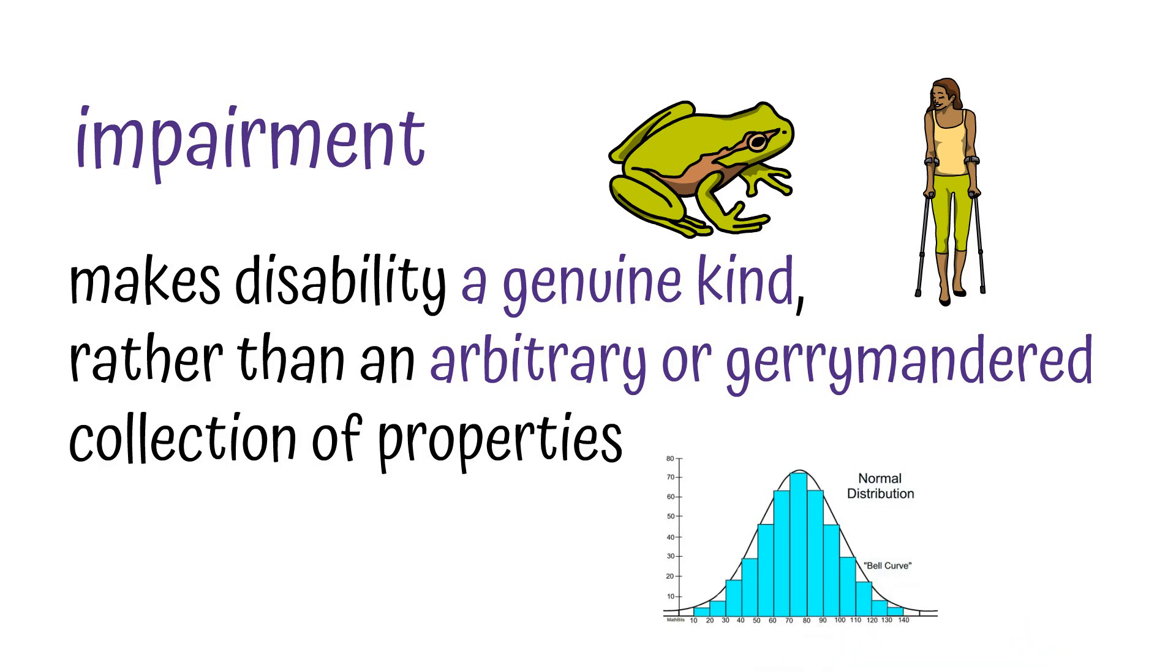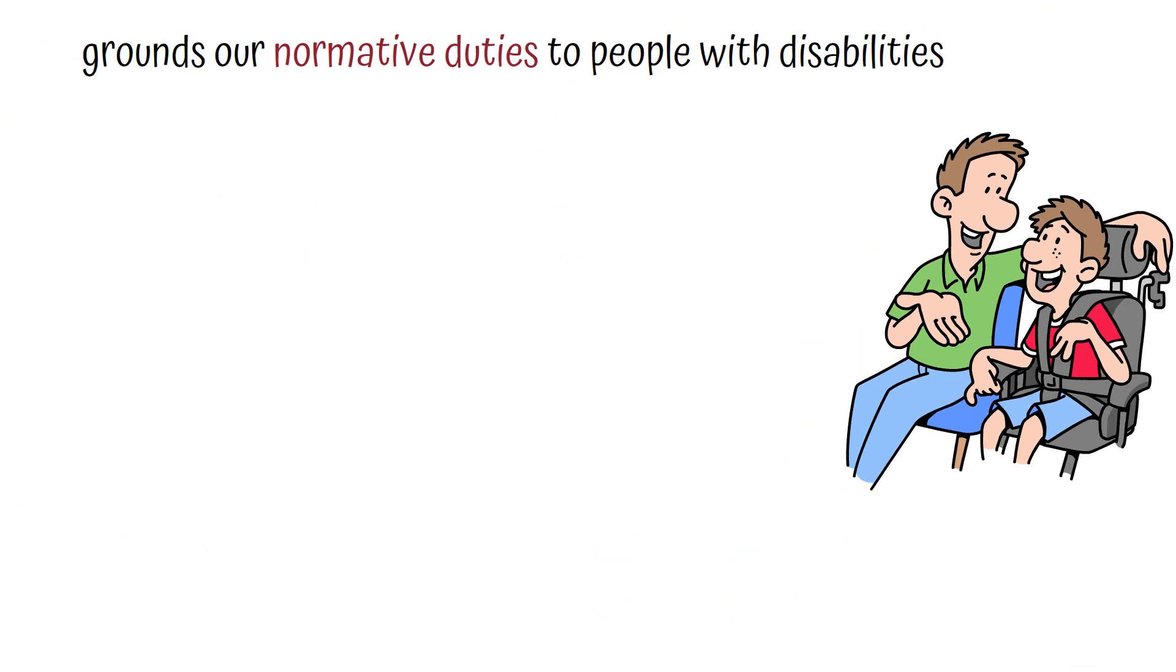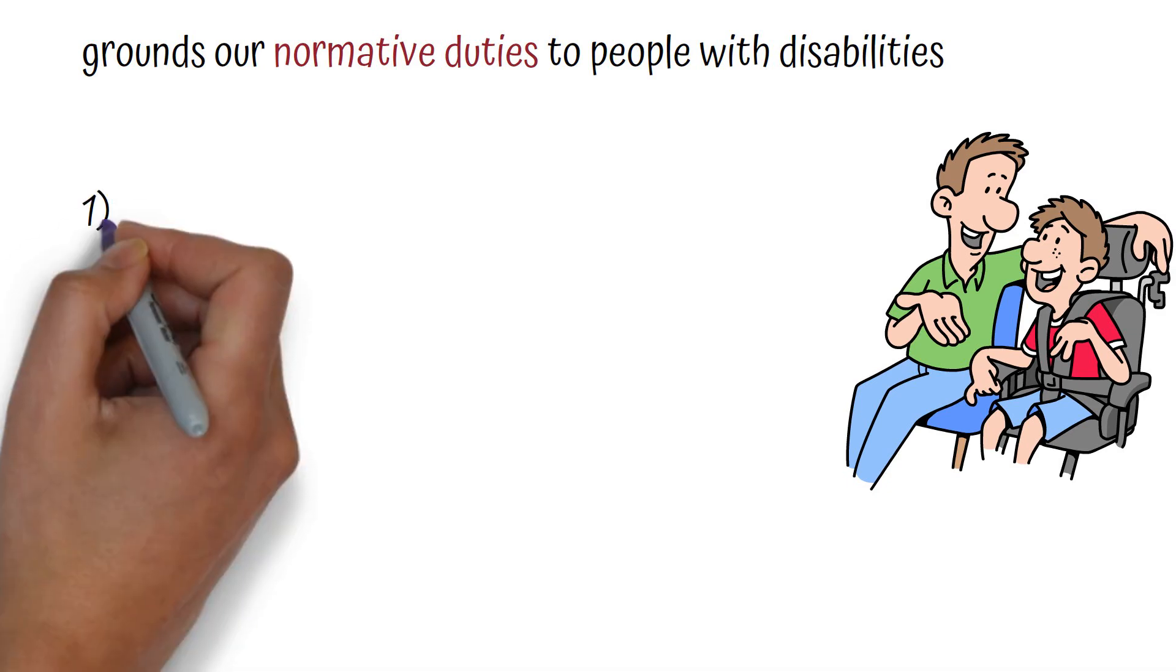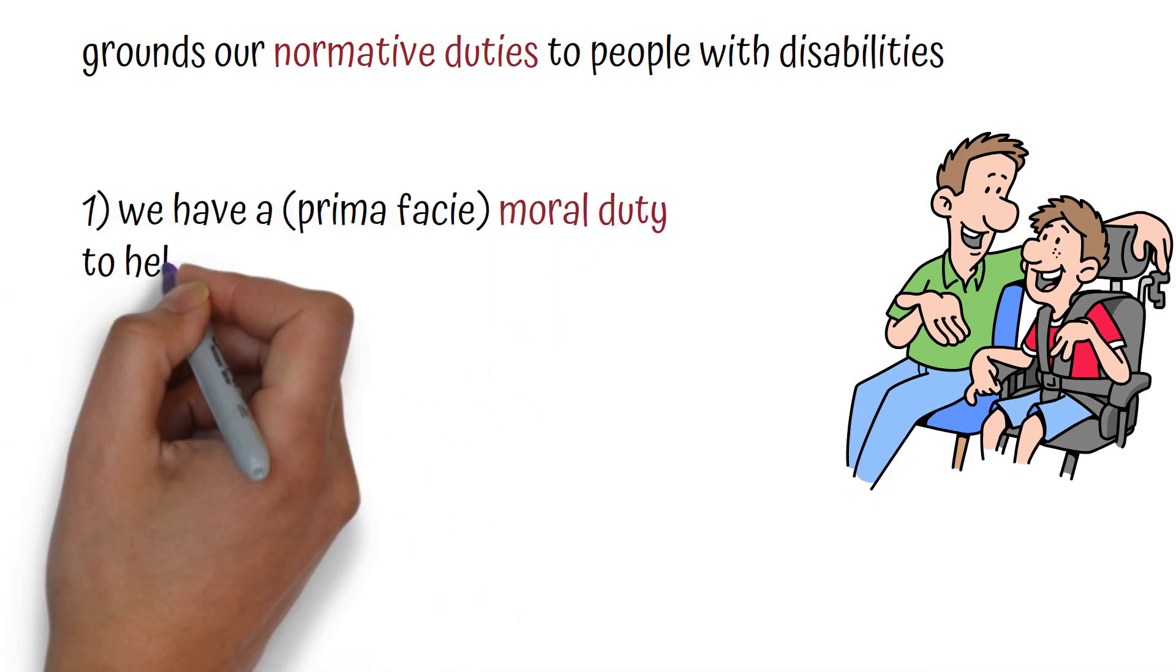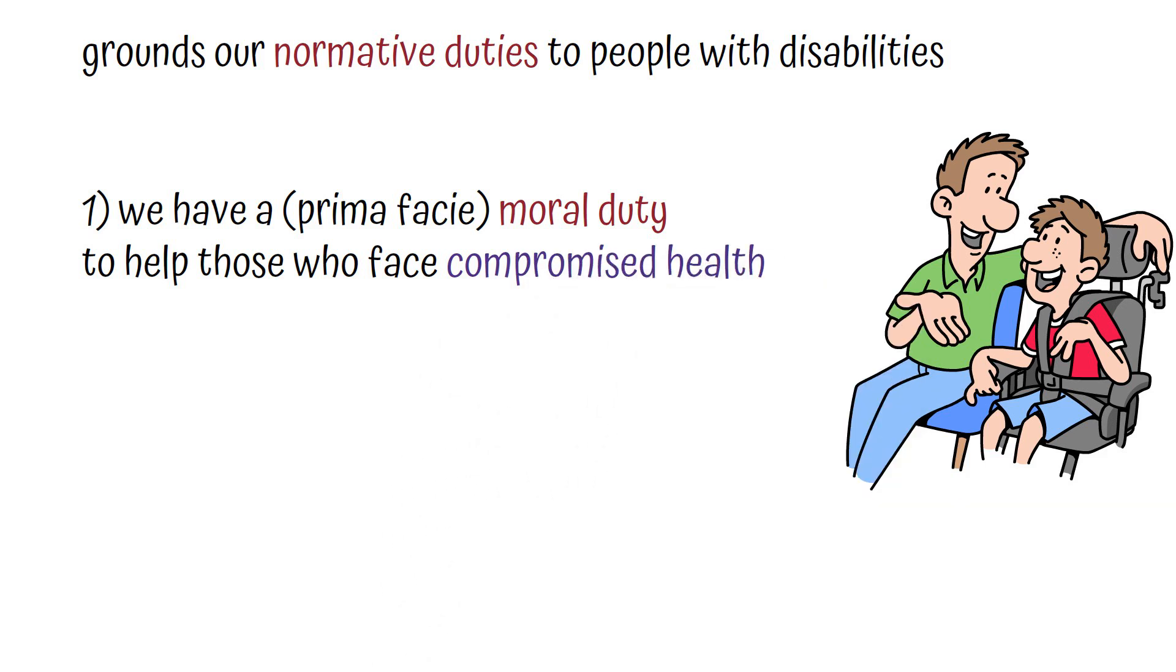The real payoff, pun intended, for Kuhn is that this value-free basis explains our normative claims, why we invest resources in treating and accommodating disability. We have a moral duty to help those who face compromised health, and by definition, disability is an enduring state of compromised health.